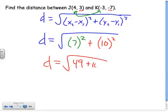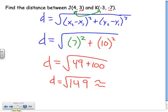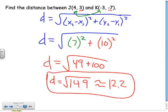And I can simplify. 49 plus 100, d equals the square root of 149. And I can see if there's perfect squares of that. But in this case, I do not believe there are. So what we do is we leave it like that, or I can say it's approximately 12.2. Either way, I'm okay with either answer. √149 or 12.2 would be the distance between those two points.